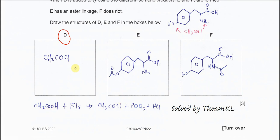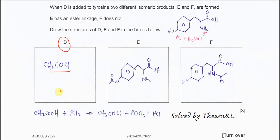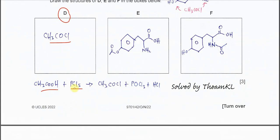To form D, ethanoic acid reacts with PCl₅ and converts to ethanoyl chloride. The side products formed are POCl₃ and white fumes of HCl. This is how ethanoyl chloride is formed from a carboxylic acid using PCl₅. No heat is required — they just react.